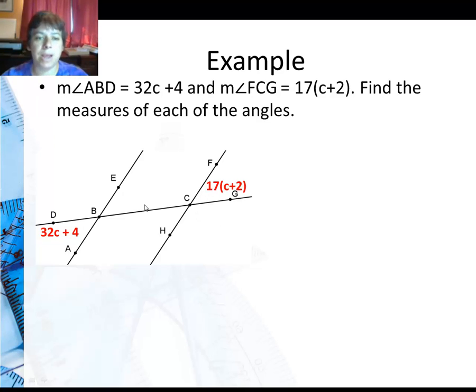...this angle pair right here, they're on opposite sides of the transversal. So they're an alternate type of angle, which should automatically tell you they're congruent. But just make sure they're alternate, both either interior or exterior. And yes, they are alternate exterior angles. And those are congruent. So I'm going to set these two equal to each other.